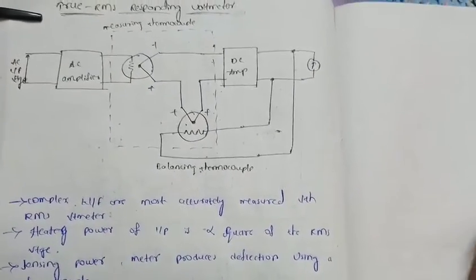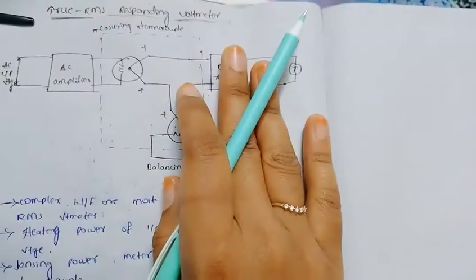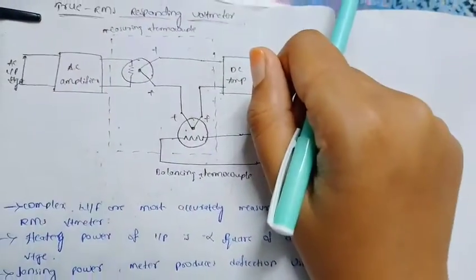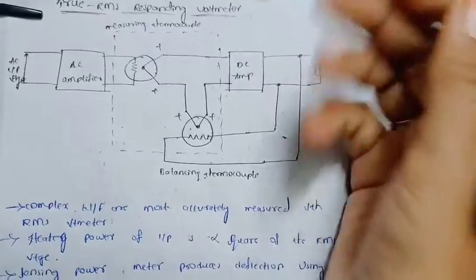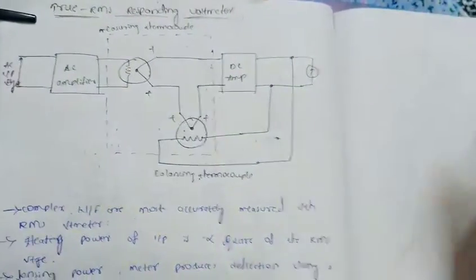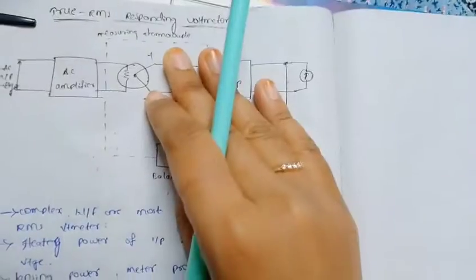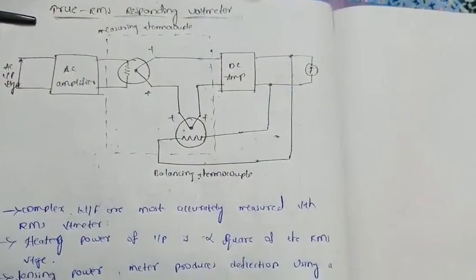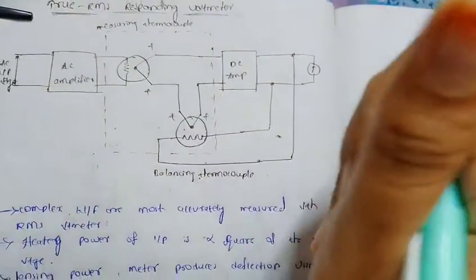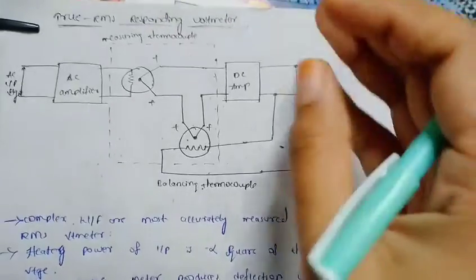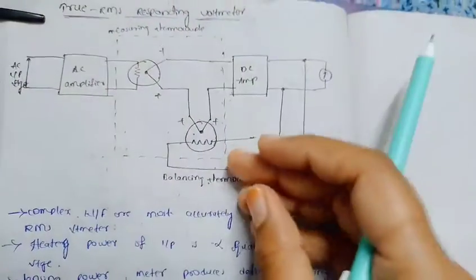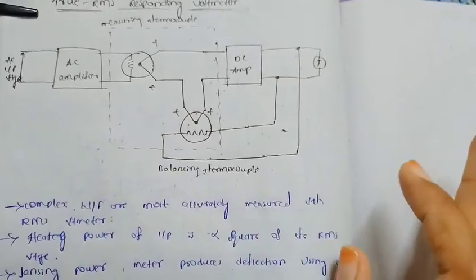True RMS Responding Voltmeter — here is our circuit diagram. We can measure simple waveforms, and we can also measure complex waveforms. By using this True RMS Responding Voltmeter, we can measure complex waveforms accurately.